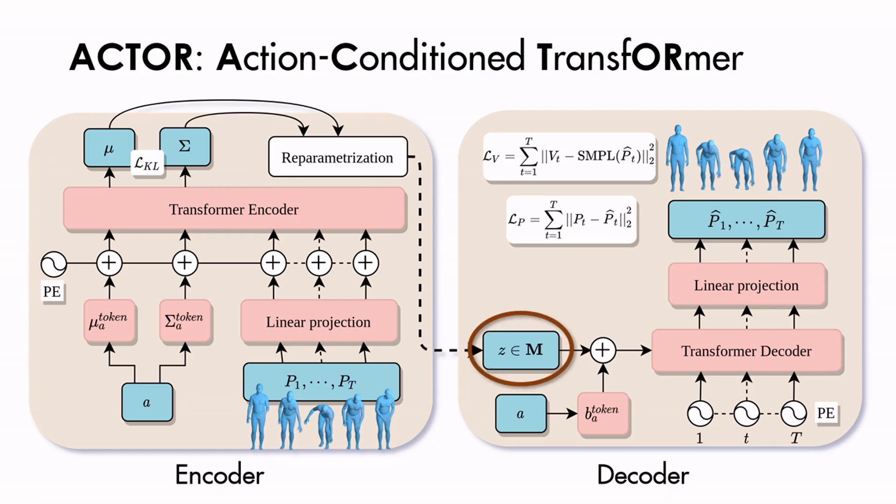Given a single latent vector z and an action label a, the decoder generates a human motion for a given duration.